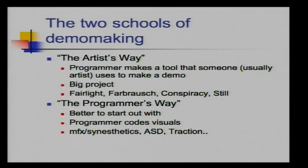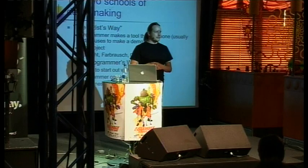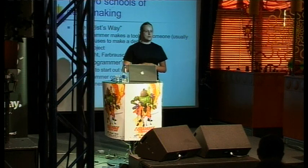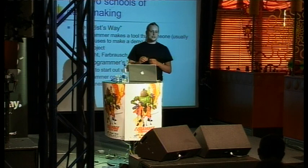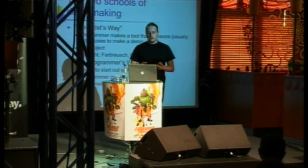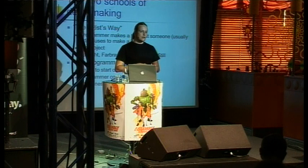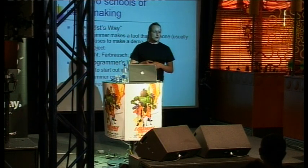I think there are basically two schools and two ways to make a demo. I call them the artist way and the programmer way. The artist way is the newer of these — the programmer makes a tool that someone else, or maybe the programmer themselves, uses to make a demo. The tool would probably be something like a combination of 3ds Max and Photoshop, including resource editors, timeline editors, and maybe some way to build scenes. Groups that use this approach include Fairlight, Farbrausch, Conspiracy, and Still. Farbrausch has actually released their tool so you can see how it works.